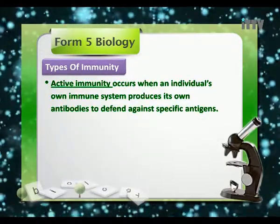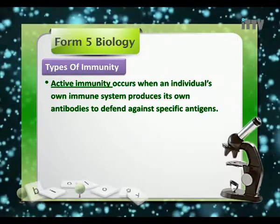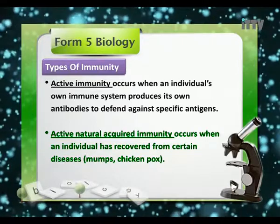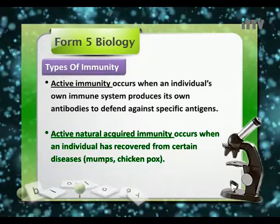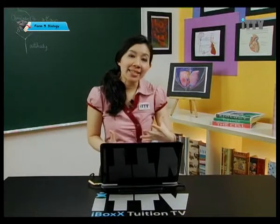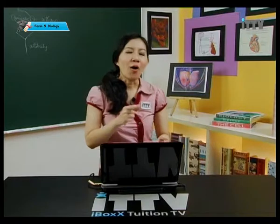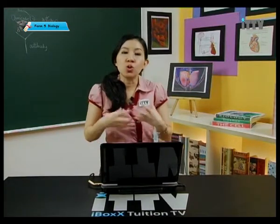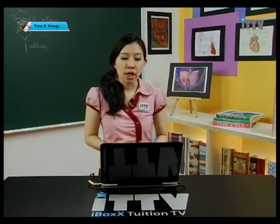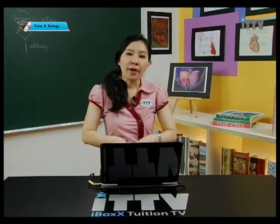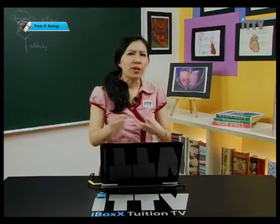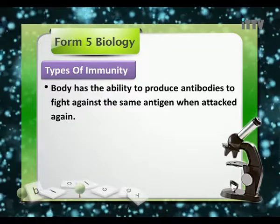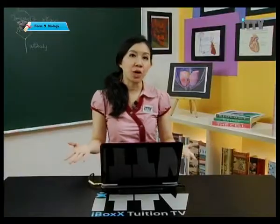Active immunity occurs when an individual's own immune system produces its own antibodies to defend against specific antigens. Active natural acquired immunity occurs when an individual has recovered from certain diseases like mumps, chicken pox, or measles. If you ever had this disease when young, you'll never have it again. This is because active immunity means your body naturally and actively produces its own antibodies. The body has the ability to produce antibodies to fight against the same antigen when attacked again — that is why we will never get chicken pox again.